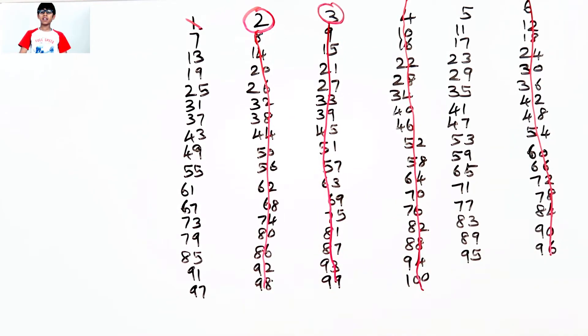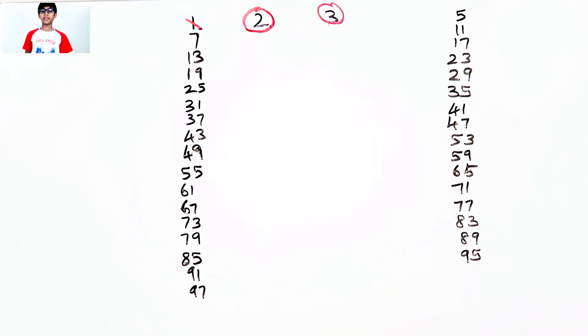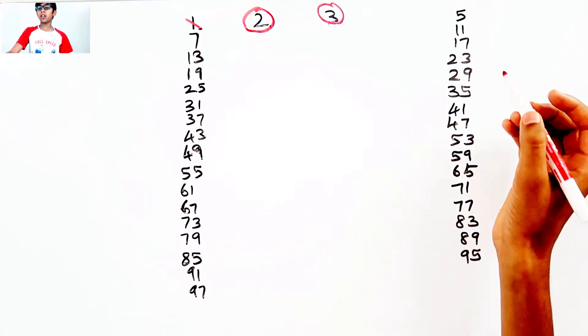To make our lives easier, I'm going to erase 4 of these. Now this is way more easier, and there's only 2 rows.